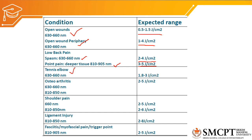For tennis elbow, we use red visible light with an intensity of 1.8 to 3 joules per centimeter square. For osteoarthritis, if it is a peripheral area of the joint we use visible red, and if it is the deeper area we use infrared laser, with an intensity of 2 to 5 joules per centimeter square.